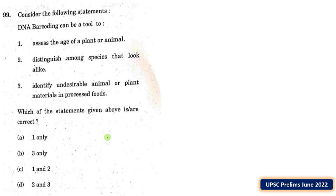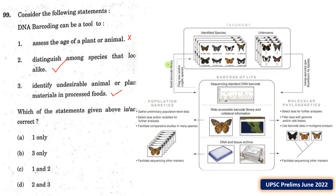DNA barcoding, just like our fingerprint, consists of unique codes or sequences that help us distinguish a plant or animal — so statement 1 about assessing age is not correct. Statement 2 — distinguishing among species that look alike — is right. Statement 3 — identifying undesirable animal or plant materials in processed foods — is also correct, as DNA barcoding is widely used to find adulterants in foodstuffs. So 2 and 3 are the correct options, making D the answer.